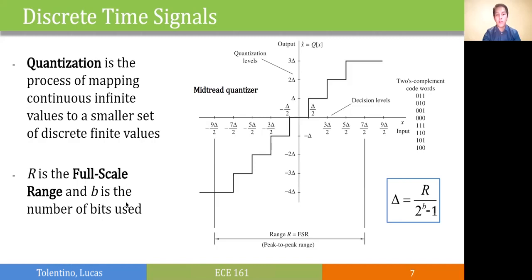An example shown here is the mid-thread quantizer, which has a decision point at odd multiples of delta over 2. So when you have an input value from 0 until before delta over 2, it gets rounded to 0, and when it gets to delta over 2 until before 3 delta over 2, it gets rounded to delta, and so on. So we have this error of rounding.